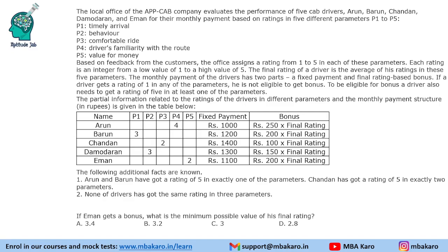The next question asks: if Iman gets a bonus, what is the minimum possible value of his final rating? Since he is getting a bonus, he must have a 5 and must not have a 1. A 2 is already given. To minimize, give him another 2 — but he cannot get 2 more than twice, so the remaining two values are 3 and 3. Total: 5+2+2+3+3 = 15, average = 3. So the minimum possible rating is 3.